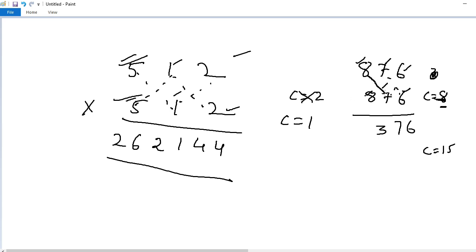Fourth step, 8 into 7, 56 plus 8 into 7, 56. 56 plus 56, 112. 112 plus 15, 127. Here carry is equal to 12. Last step, 8 into 8, 64 plus carry 12, 76.